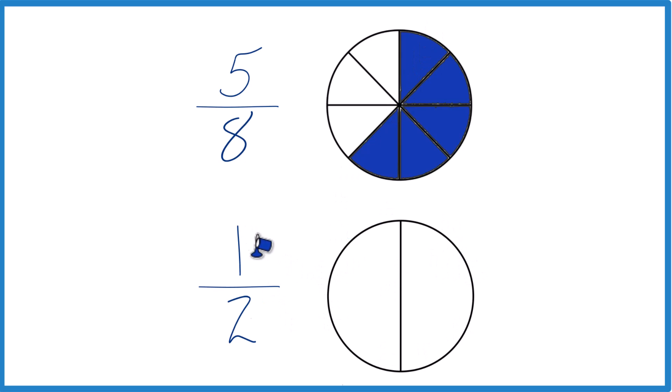Down here we have 2 pieces, we're going to fill in 1 of them. And again, you can see 5 eighths, that's larger than 1 half.